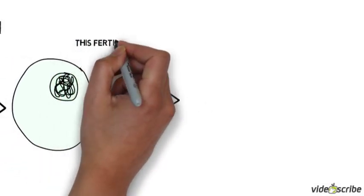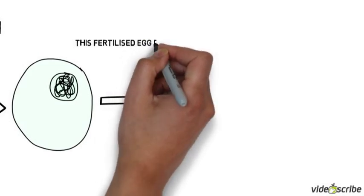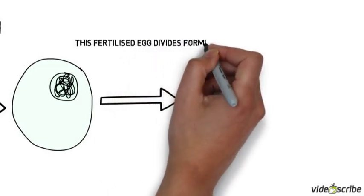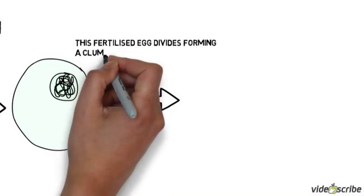So it keeps dividing and makes lots of different cells. These cells are undifferentiated, which means they can still turn into any type of cell.